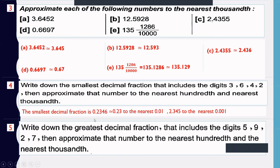To the nearest thousandths from 0.2346: the thousandths digit is 4. The next digit is 6, which is greater than 5, so increase 4 by 1 — approximately 0.235.